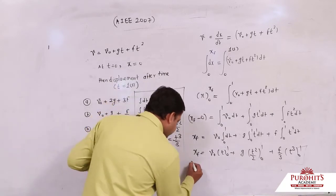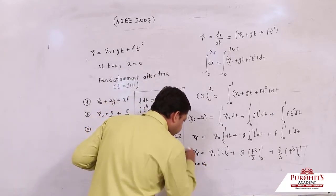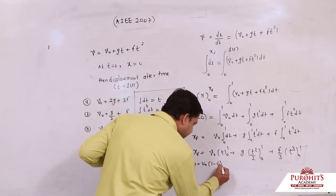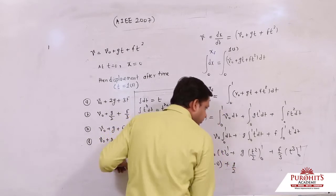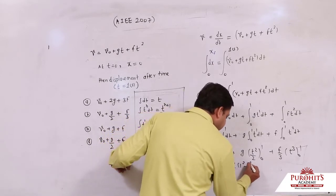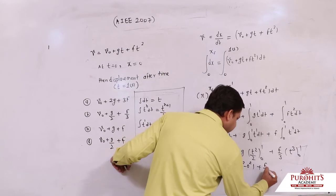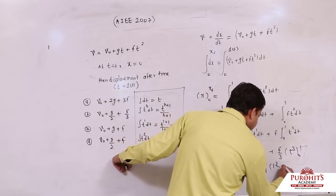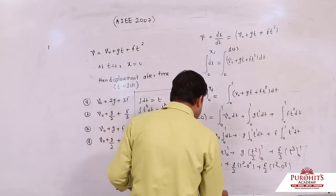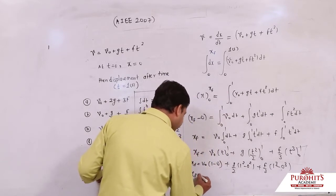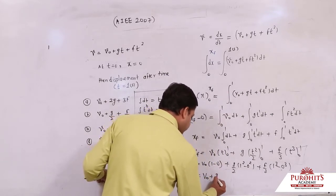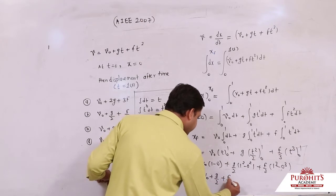If you check, xf equals v0, upper limit is 1 minus 0, g by 2, upper limit is 1 square minus 0 square, f by 3, upper limit is 1 cube minus 0 cube. Or finally, this can be written - see - xf can be written as v0 plus g by 2 plus f by 3.